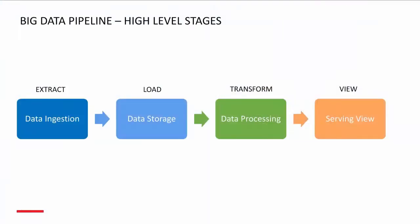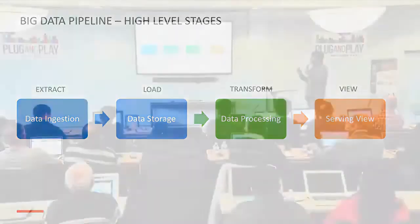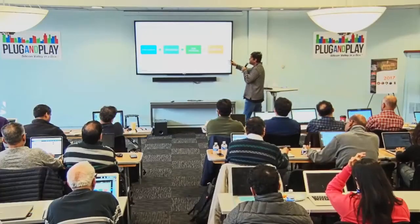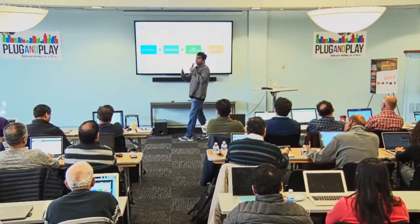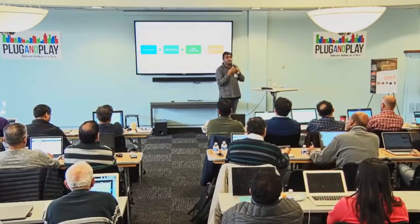But trickle feed was very difficult — maintaining consistency is really difficult. Now, these are the big data high-level stages: data ingestion, data storage, data processing, and serving/view. For each of these areas, we have multiple different software solutions that cater to each of these operations.